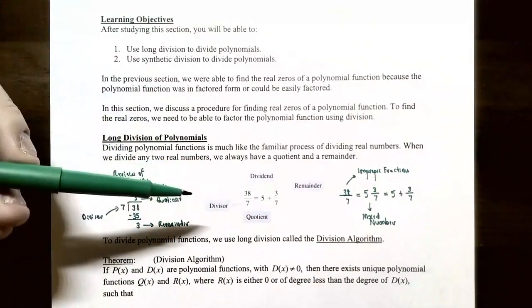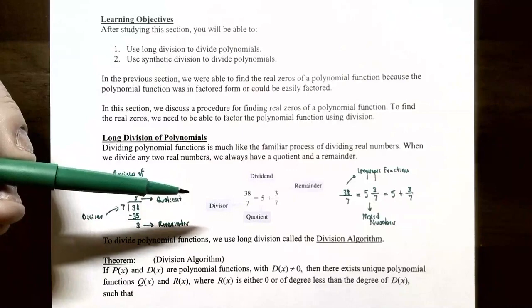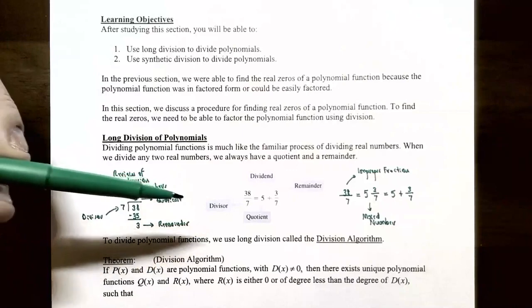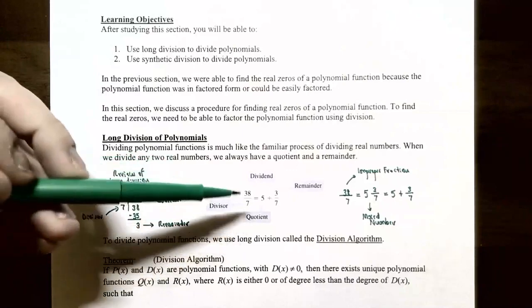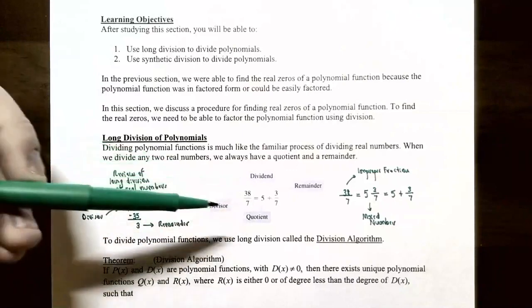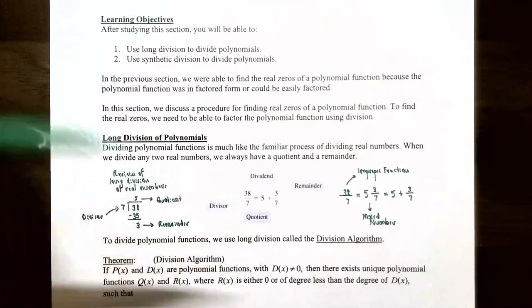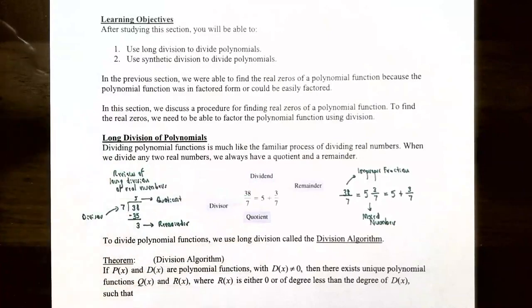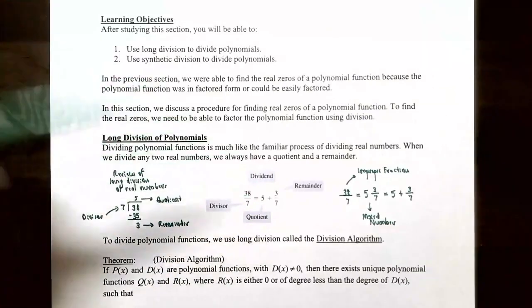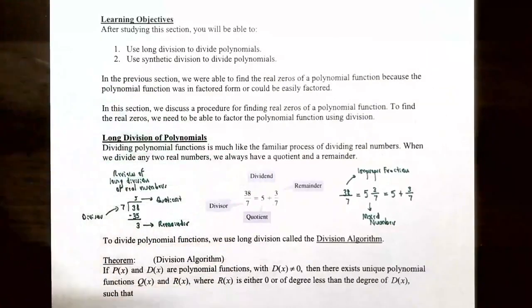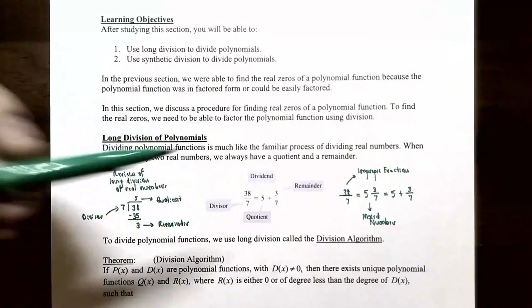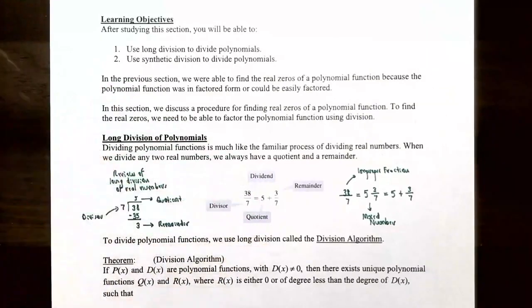This labels all the different parts of a division problem. You have 38 as the dividend, 7 is the divisor, the answer when you divide is called the quotient, the remainder is 3, and you always place the remainder over the divisor to make it a fraction.